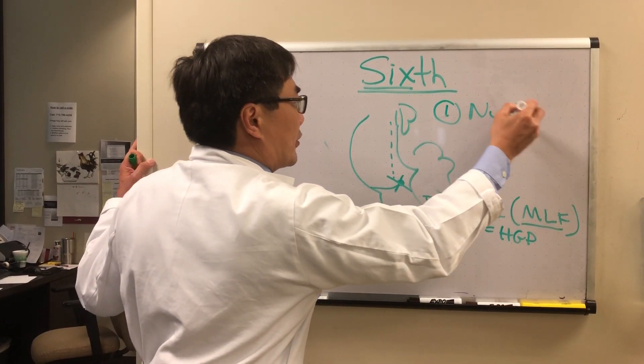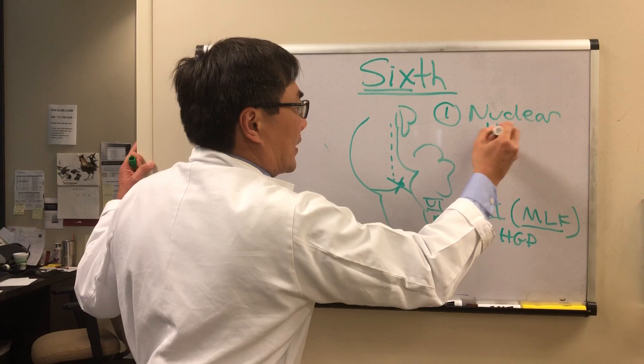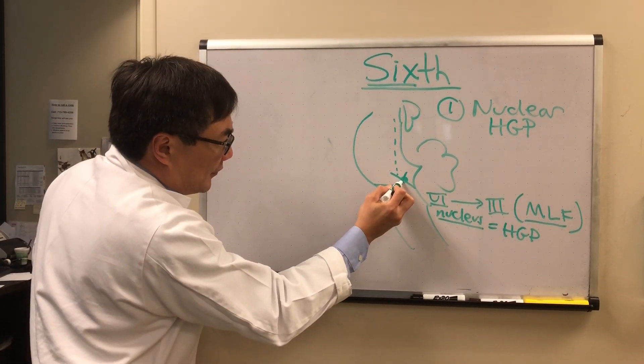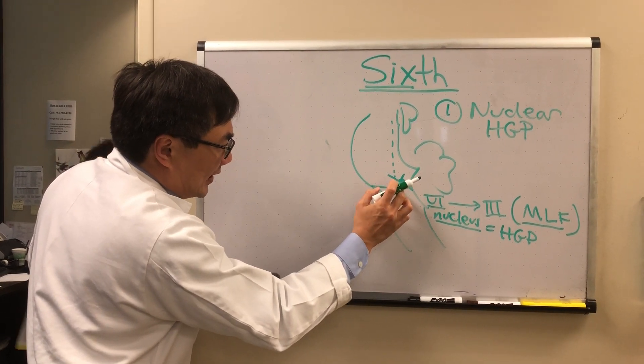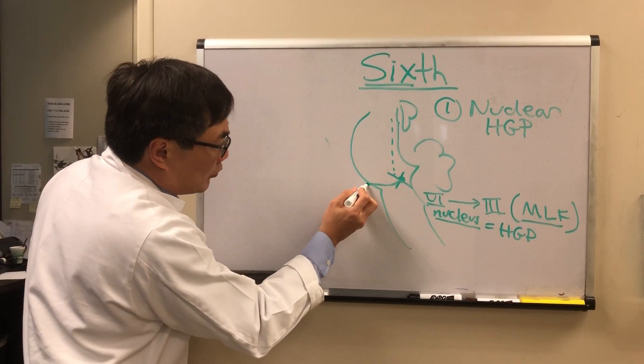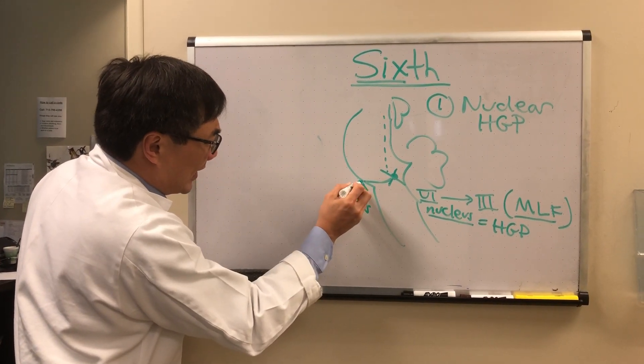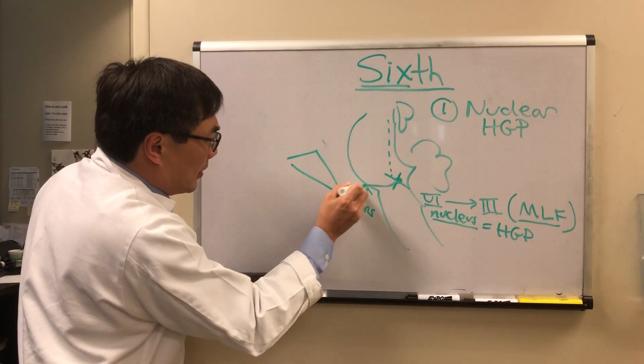The nerve itself travels as a fascicle, which is this little tiny piece inside the pons itself, and exits the root exit zone of the pons. It's tethered there and then it has to go up this bone which is called the